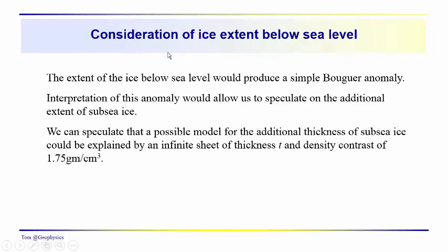An important point to consider: if the ice extends an additional 1,400 meters below sea level, the extent of the ice below sea level would produce a simple Bouguer anomaly. Interpreting this anomaly would allow us to determine how thick the ice was. The sub-sea ice would have a density contrast of 1.75 grams per cubic centimeter — that's 2.67 minus 0.92.